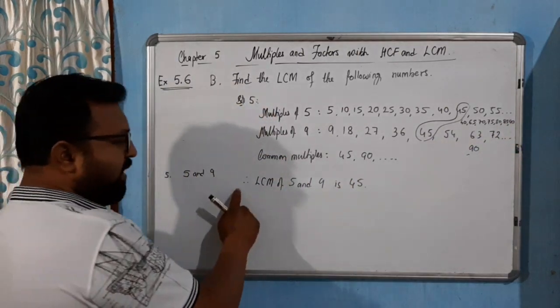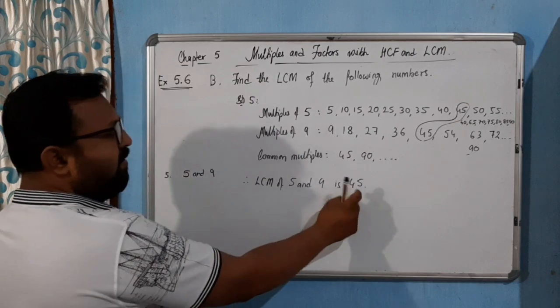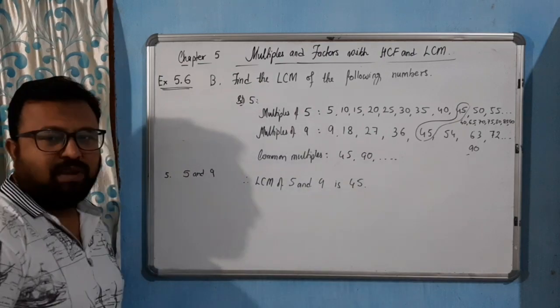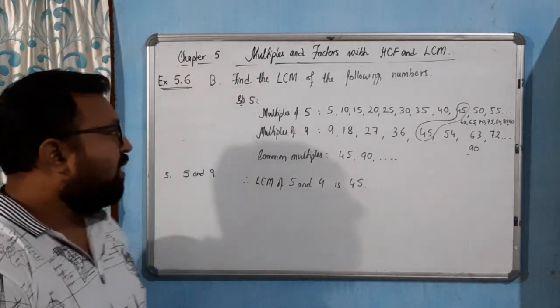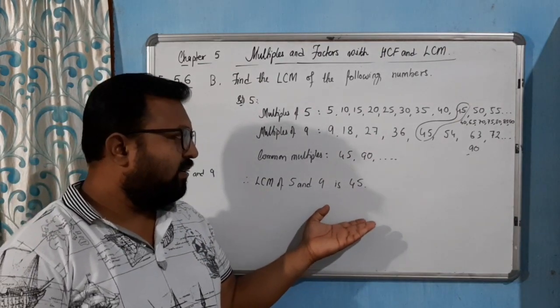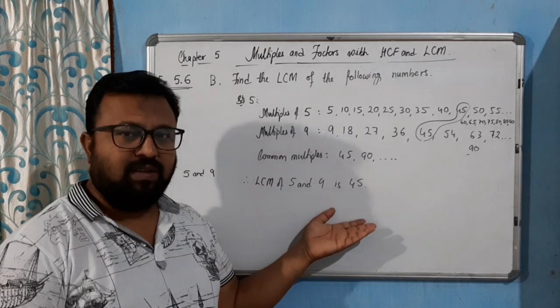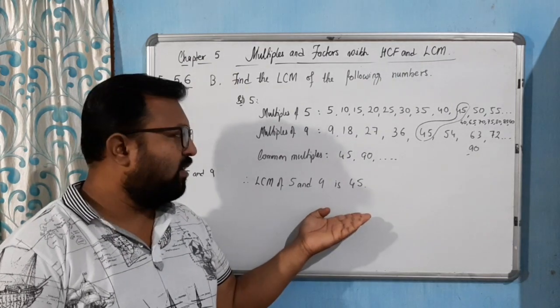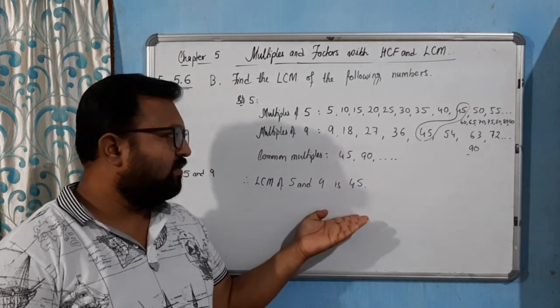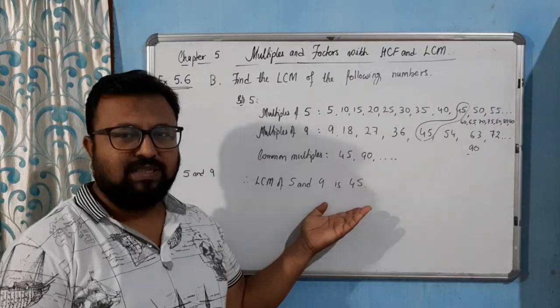Therefore, the LCM of 5 and 9 is 45. I hope this is very much clear to you. I think you understood this part, and you can do the rest of the questions in this exercise.